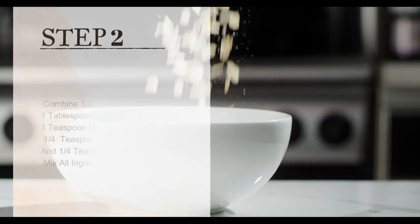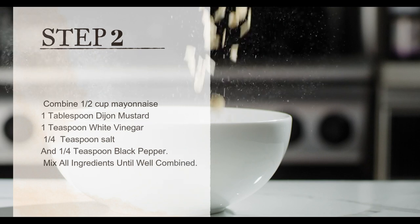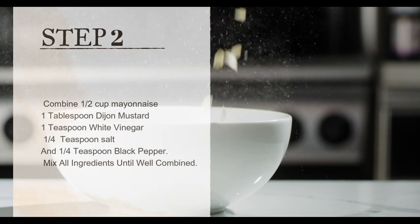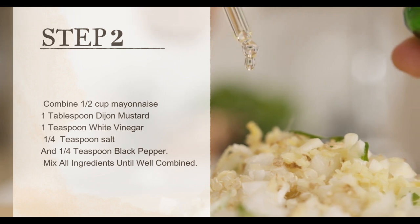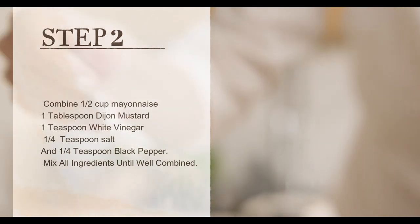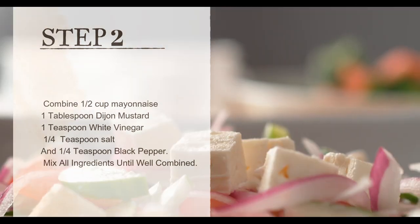Step 2. Prepare the egg salad mixture. In a bowl, combine 1 half cup mayonnaise, 1 tablespoon dijon mustard, 1 teaspoon white vinegar, 1 quarter teaspoon salt, and 1 quarter teaspoon black pepper. Mix all ingredients until well combined.